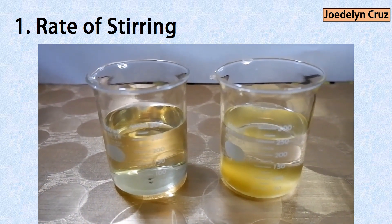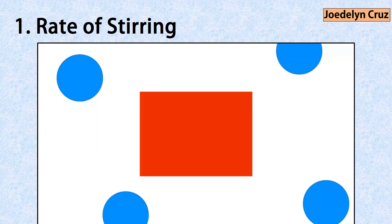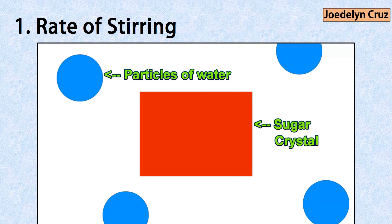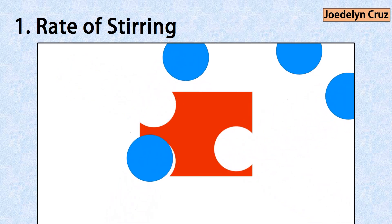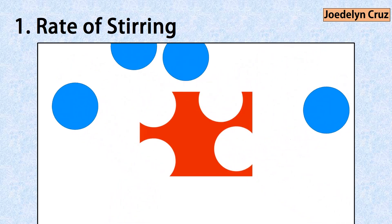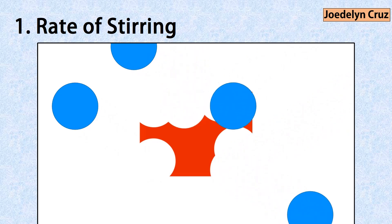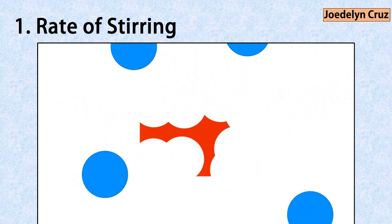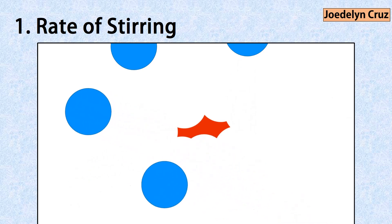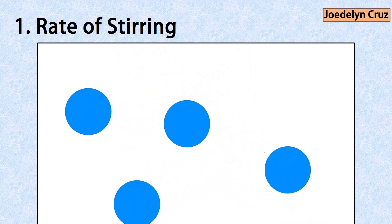Let us look closely at the particles of the stirred solution. The blue circles represent the particles of water, while the red square represents the sugar crystal. Stirring the solution lets the water particles come in contact faster with the corners and edges of the sugar crystal. Therefore, the sugar crystal dissolves faster.